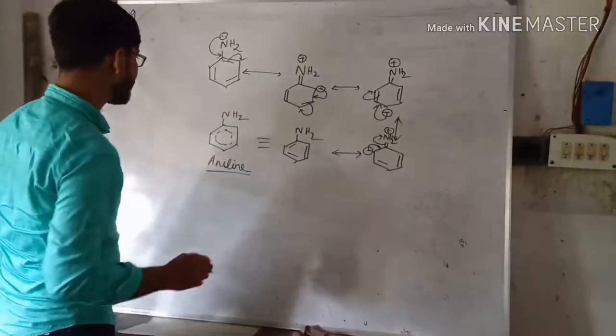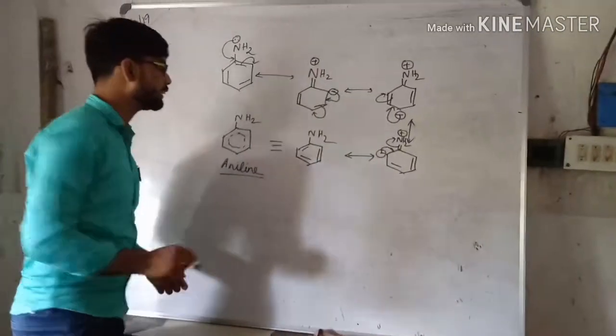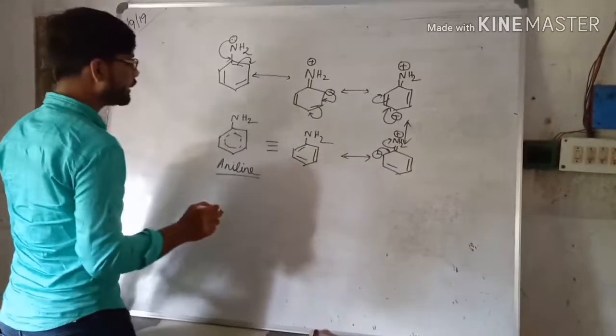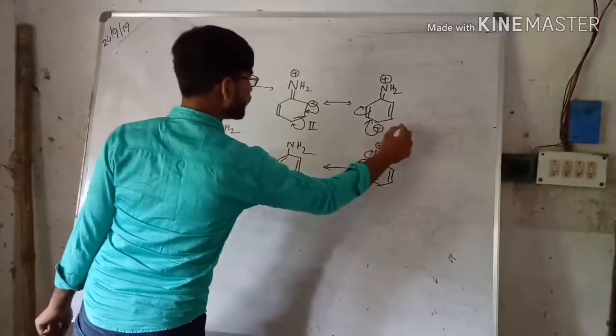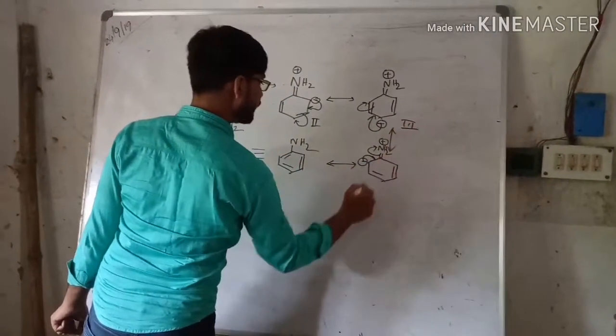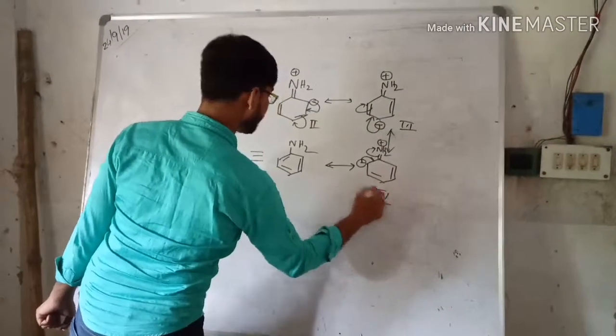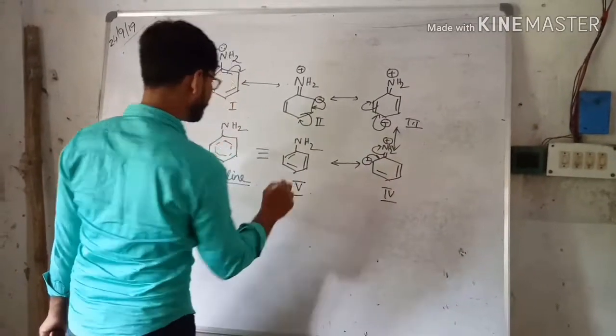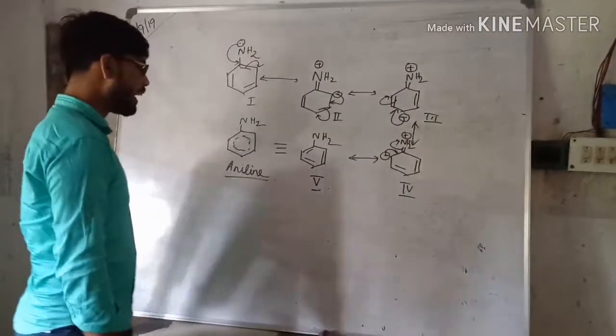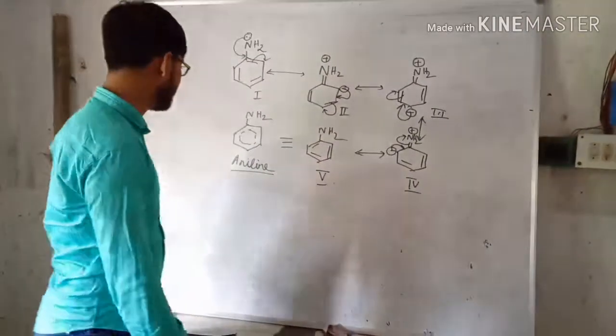This is the structure of aniline and the resonating structure. So how many resonating structures are here? So aniline has 5 resonating structures here.